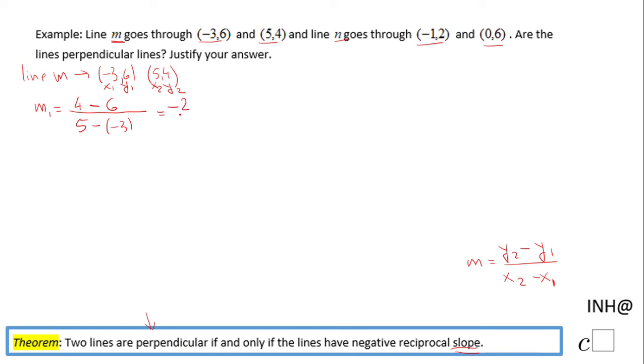We can simplify that slope and we end up with negative 1 over 4. This is the slope of line M. And now let's move to the second line.